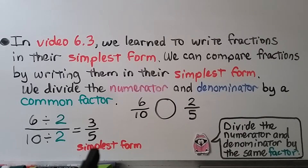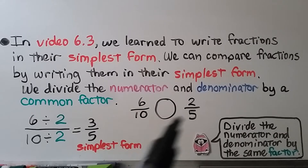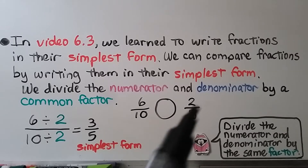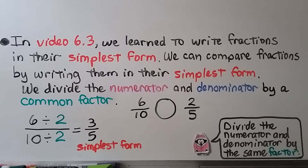Now we're comparing three-fifths and two-fifths. They have the same denominator, so whichever has the greater numerator is the greater fraction. Six-tenths is greater than two-fifths. In this problem, only one fraction had to be written in simplest form. We might have a problem where both can be written in simplest form.